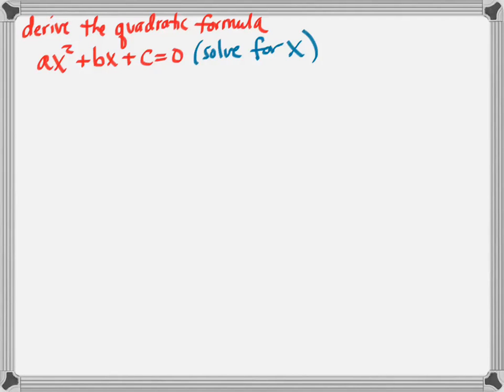So I'll treat a, b, and c as if they're numbers, and I'll follow the exact process of completing the square. So the first step is to divide by the leading coefficient, and in this case it's just a. So simplifying that, I'll get x squared plus b over ax plus c over a, and it still equals zero.